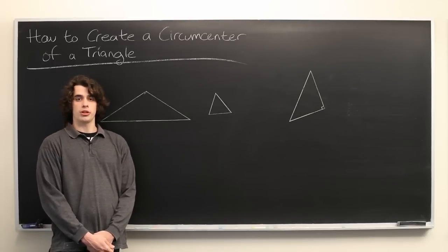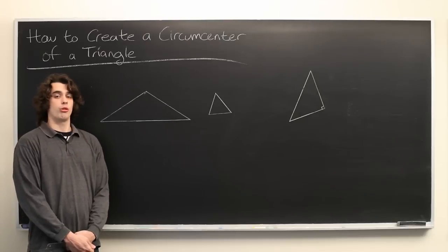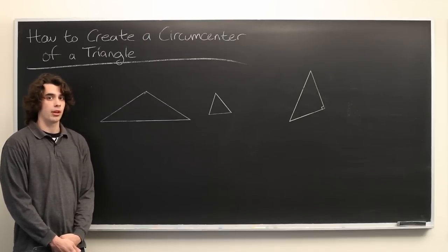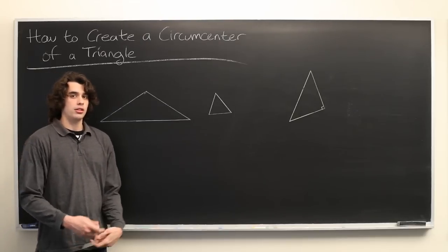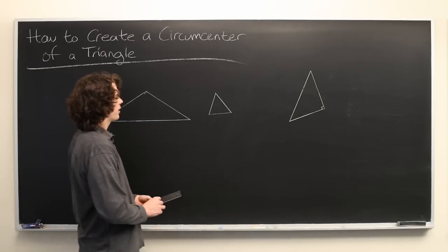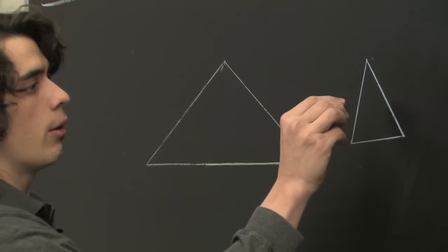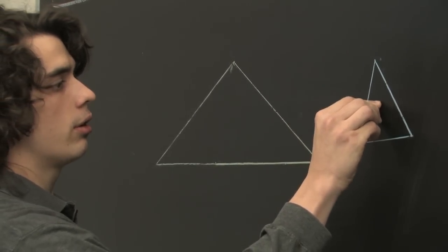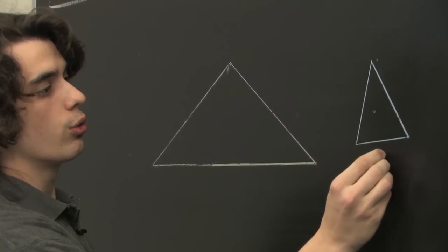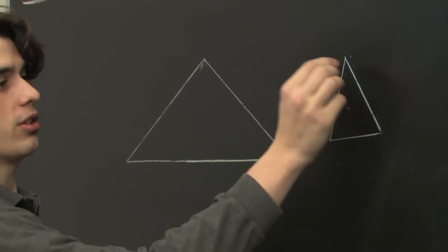A circumcenter is one of several different interpretations of the geometric center of a polygon. In this case, you can think of the circumcenter as the center of a circle which goes through all three of a triangle's vertices.